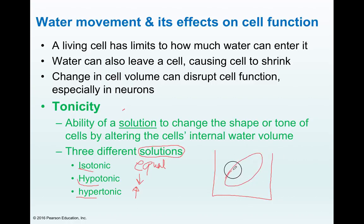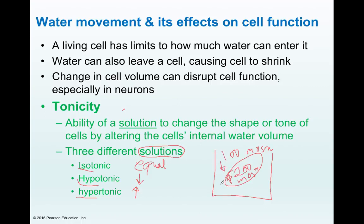If I'm describing a scenario like this, and this is my cell, let's say 200 milliosmolarity versus 100 milliosmolarity. If I was to describe this solution, I first compare the osmolarity of these two solutions. So this is 100, this is 200. I'm going to put an arrow: 200 is a larger number, and 100 is a smaller number. I'm going to use one of these three words to describe what type of solutions I have.